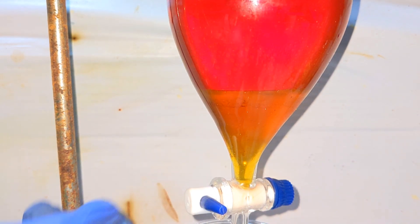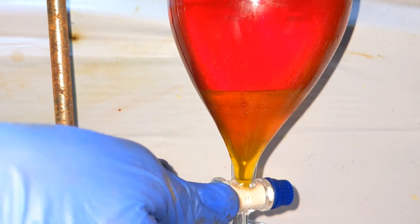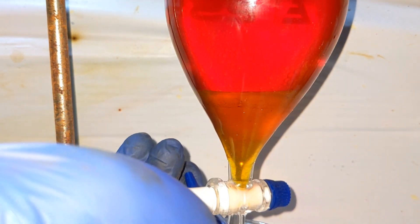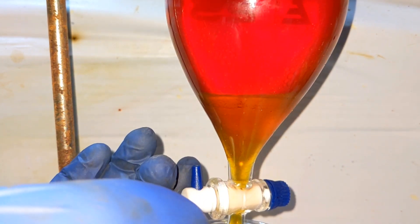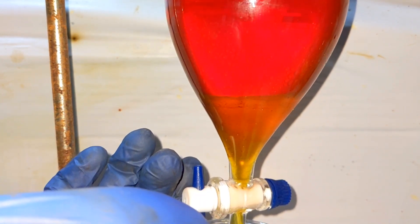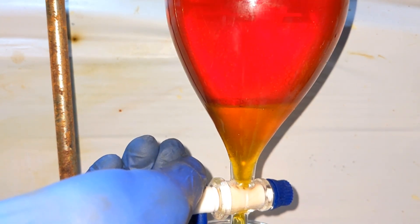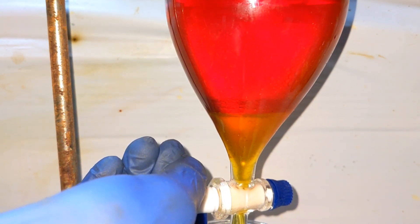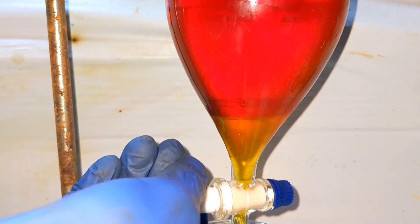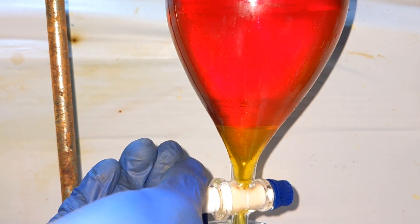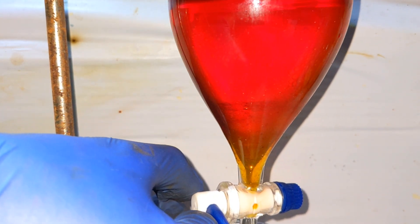In the separatory funnel, the lower layer is water and the upper layer is diethyl ether. The ethereal layer is much darker due to the increased presence of fluorescein. The lower water layer was then drained and the ethereal solution was washed once again with 50 milliliters of distilled water in order to remove soluble impurities like unreacted phthalic anhydride, resorcinol, and even sulfuric acid if present.